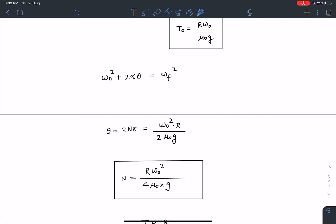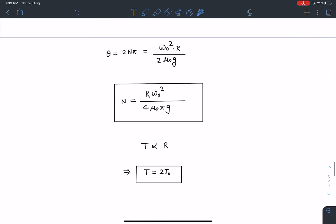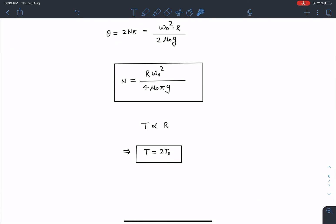And the best part here is omega naught is fixed, mu naught is a constant, g is a constant. So when I make the radius of this sphere 2R in the second case, the time after which it will stop is going to be simply 2T naught. It will take twice the time in order to stop.